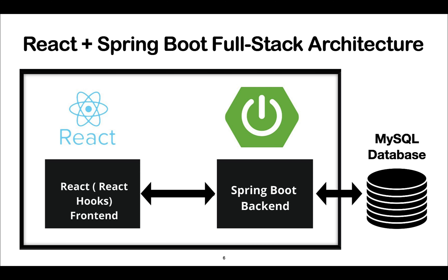This is the typical architecture: the Spring Boot backend application exposes REST APIs, the React frontend consumes those REST APIs, and at the database level we use MySQL to store and retrieve data. In the next video, we will create a Spring Boot application and expose the REST APIs, and after that we will create a React application to consume them. Let's go ahead and kick start this course by developing the Spring Boot application.